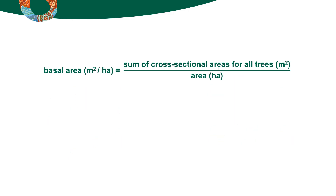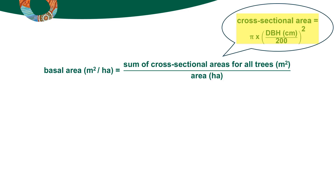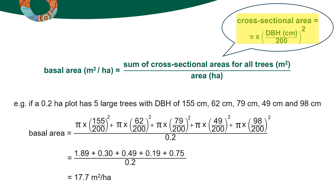The basal area of a plot can be determined by adding up the cross sectional area of each tree at breast height and dividing the total by the area of the plot. This formula for the cross sectional area of a tree converts the diameter in centimetres to the basal area in square metres.